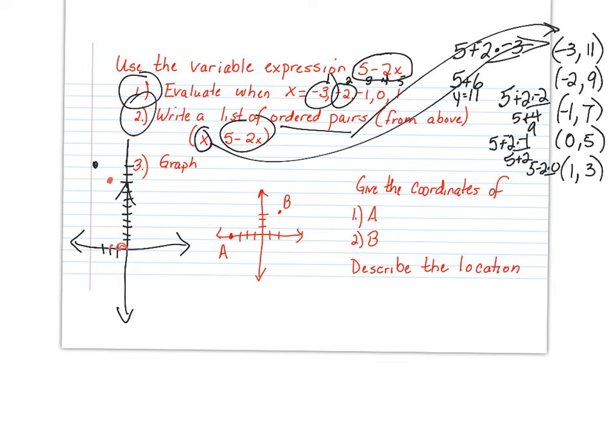(-1,7). I go over -1 and up 7. (0,5): 1, 2, 3, 4, 5. And then, (1,3). Go over 1 and up 3. That's all you have to do here.